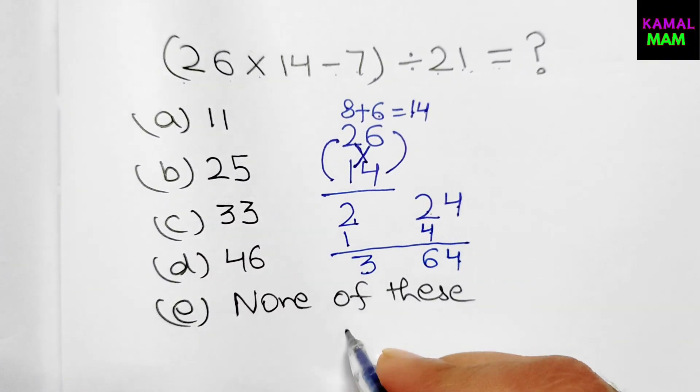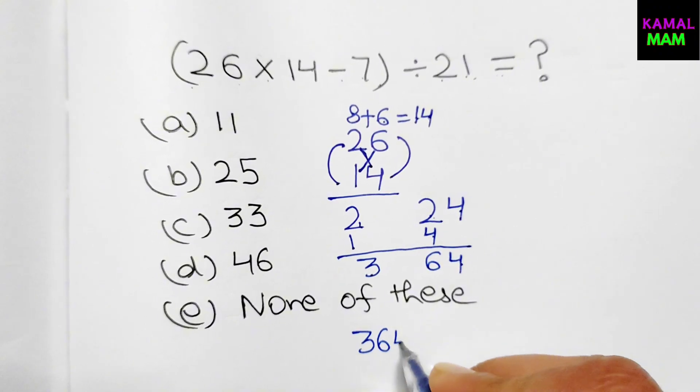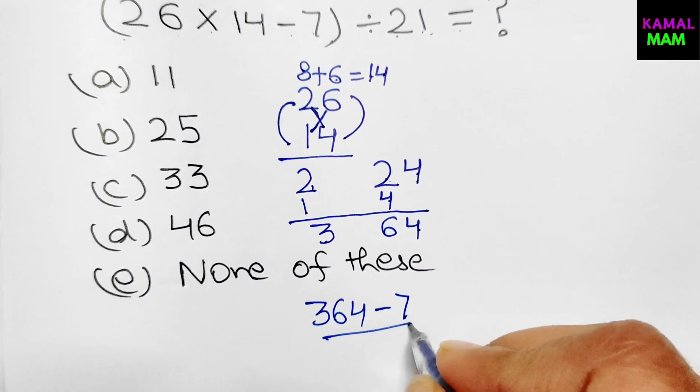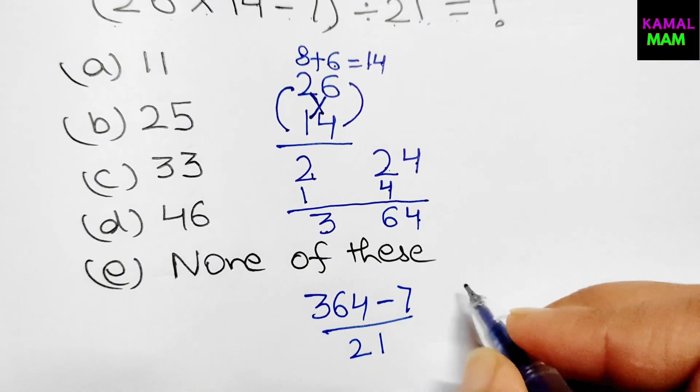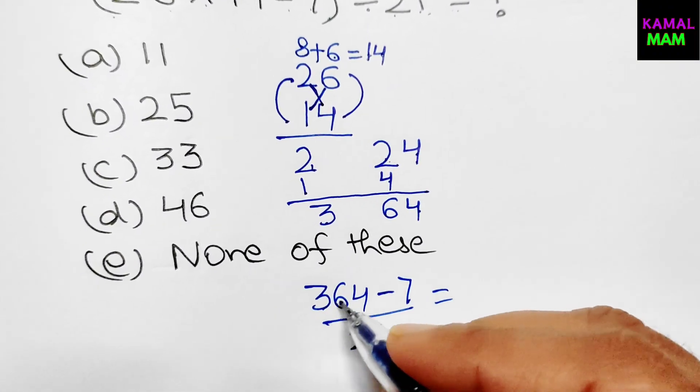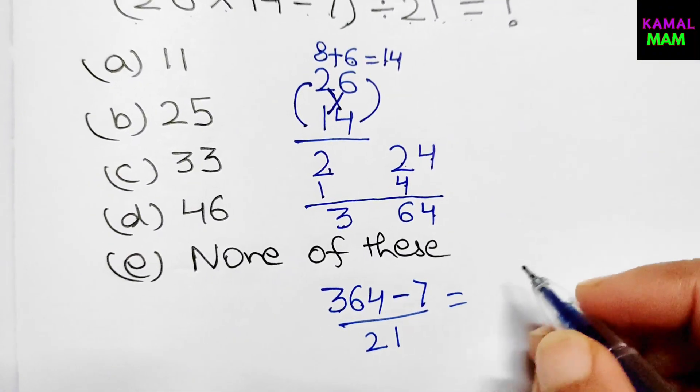So we have to write down 364 minus 7 divided by 21. Here 364 minus 7 we get 357 divided by 21.